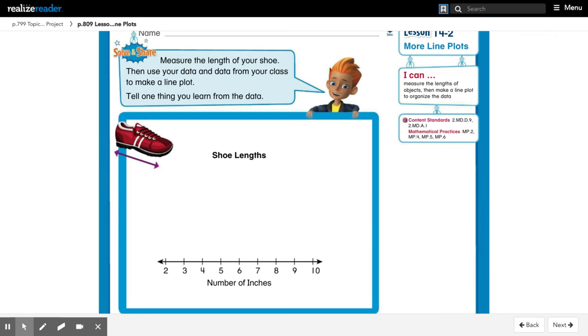Measure the length of your shoe, then use your data and data from your class to make a line plot. Tell one thing you learned from the data. So this one's a little bit difficult because we're not in school, so we don't have our classmates to be able to get more data. So instead of using our class, we're going to use our family. You need to go around your house to your family members and measure your family member's shoes. You can do your mom, your dad, your aunt, your cousin, your sister, your brother, whoever lives with you, you can use.